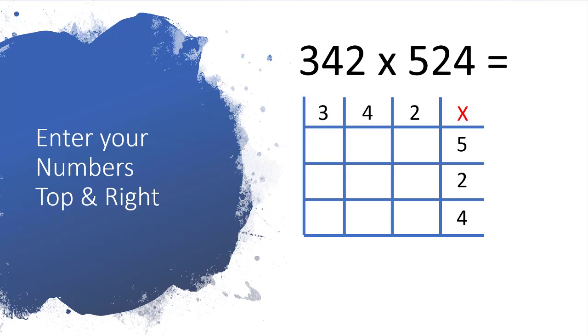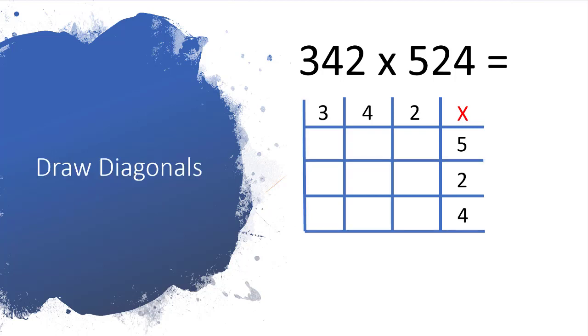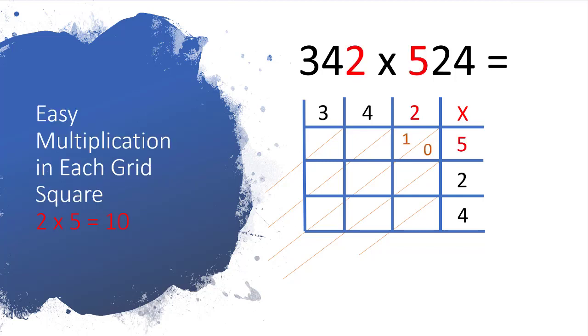So now all we need to do is draw some diagonals going across this grid. So let's draw these diagonals in. So it's quite important to draw your grid so that it's nice and square. This is the only difficult part, believe it or not, is making sure that your squares are nice and even and you've got nice even diagonals going through the grid.